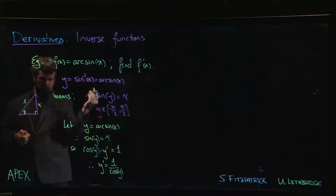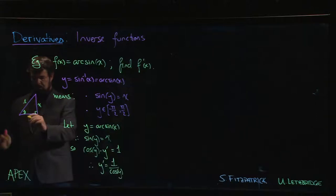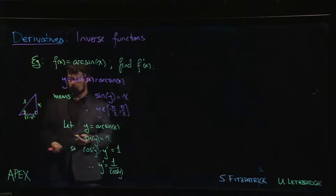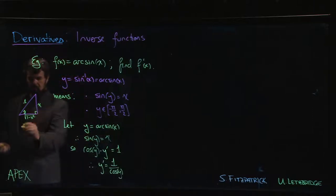Pythagoras gives us the other side. This side squared plus x squared equals one. Solve for the missing side, we get one minus x squared. So then we can say that cosine of y - cos is adjacent over hypotenuse.